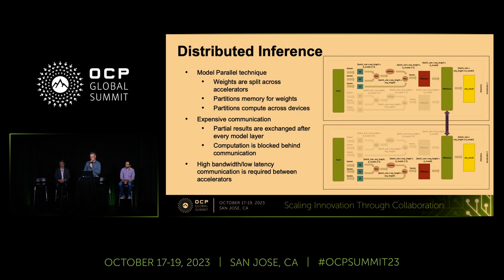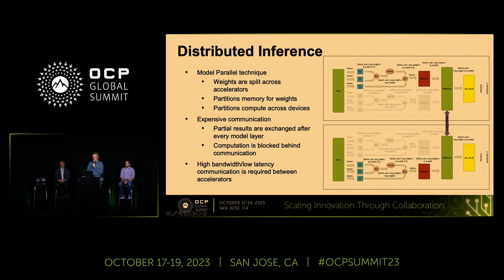In distributed inferencing, we use model parallelism to split the workload across multiple accelerators, partitioning the weights so a fraction sits on each accelerator. But this introduces a new blocking communication step that takes place after the computation and is very difficult to overlap with compute. So the interconnect bandwidth and latency matters a lot to get good performance out of the systems.